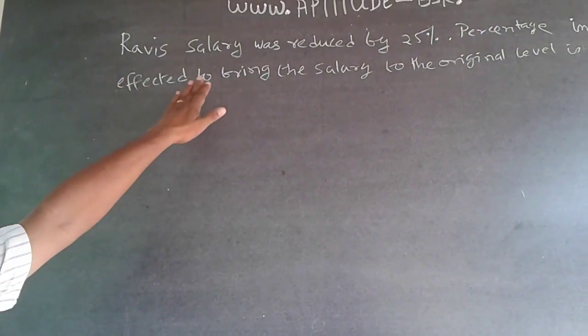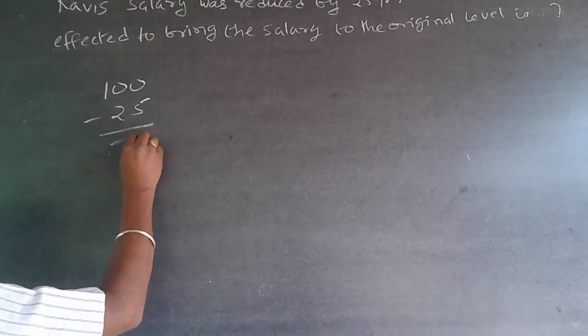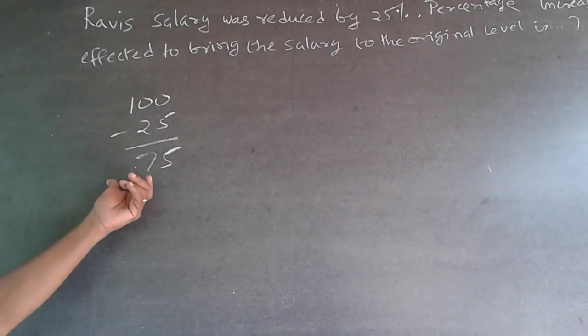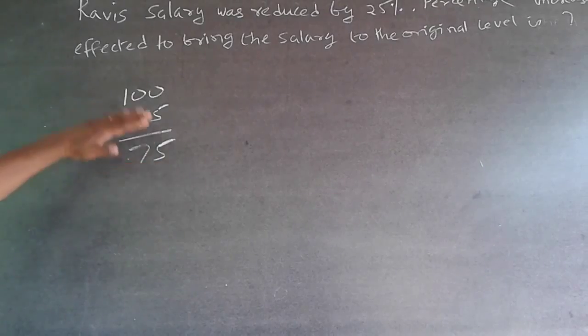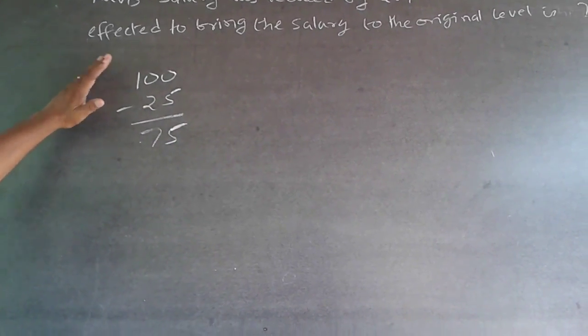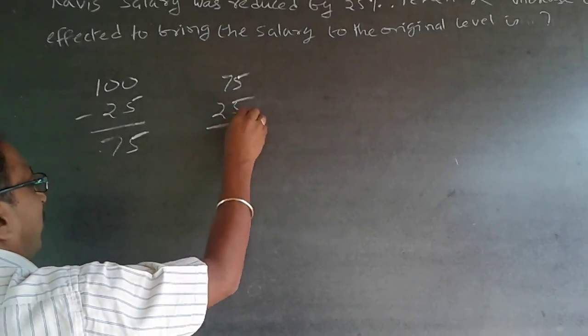Now Ravi's salary is getting reduced by 25 percent - minus 25, this will become 75. So Ravi's salary is 75. On this 75, let me make it 100. I'll have to increase it by 25 to make it 100.